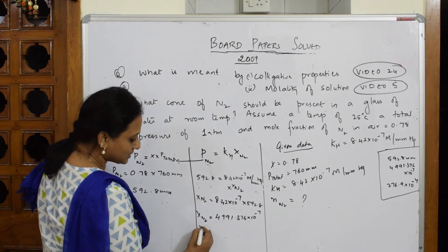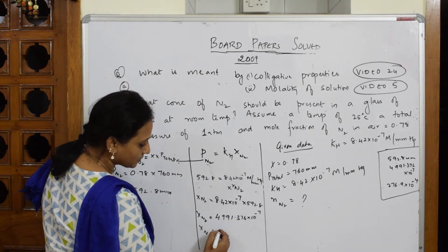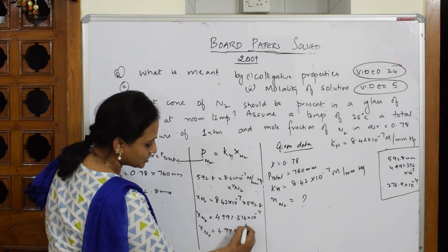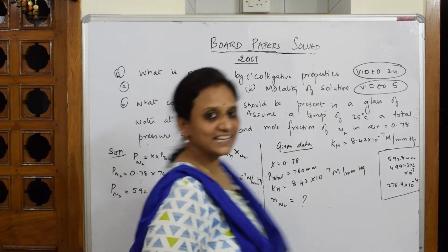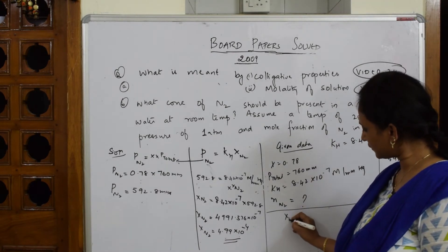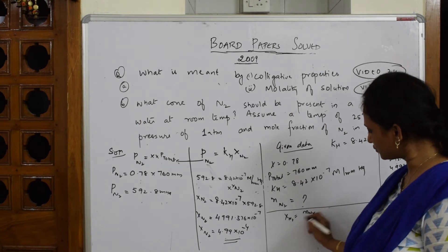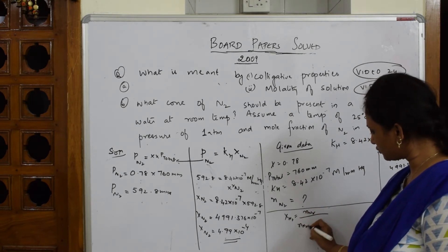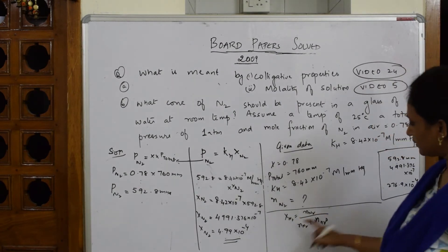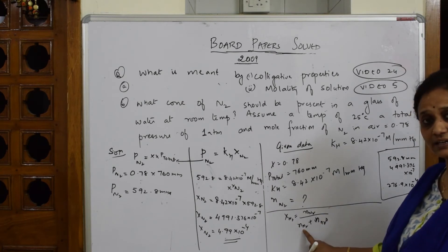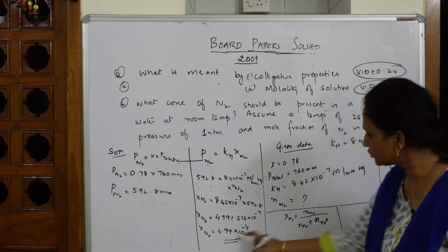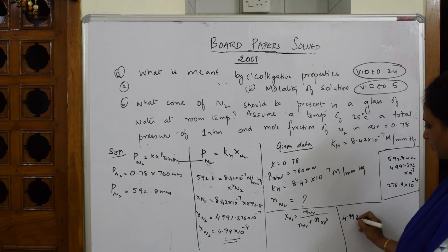When I multiply, I get a value for X of N₂ as 49137 × 10⁻⁷. That's a big number, so let me shift the decimal. Counting four places: 4.99 × 10⁻⁴. X of N₂ = 4.99 × 10⁻⁴. Now let me calculate the mole fraction using the formula: X of N₂ = number of moles of N₂ divided by (number of moles of N₂ + number of moles of water).